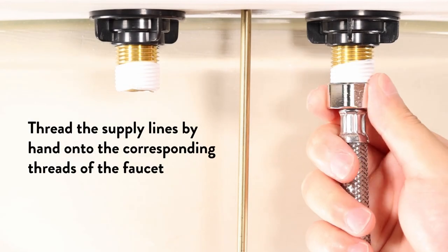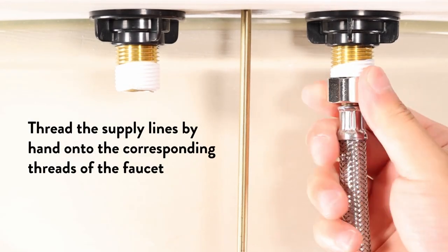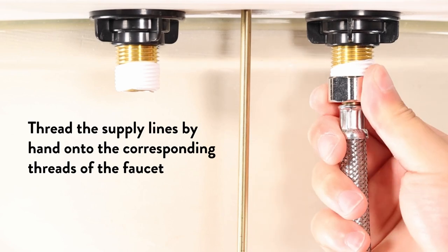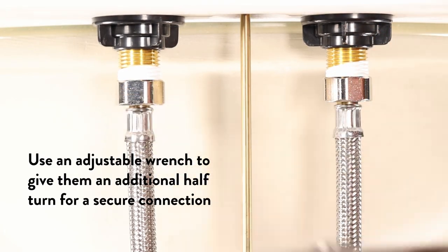Thread the supply lines by hand onto the corresponding threads of the faucet. Once hand-tightened, use an adjustable wrench to give them an additional half-turn for a secure connection.